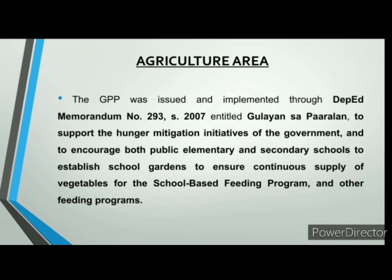The Gulayan sa Paaralan was issued and implemented through DepEd Memorandum No. 293 Series of 2007, entitled Gulayan sa Paaralan, to support the hunger mitigation initiatives of the government and to encourage both public elementary and secondary schools to establish school gardens to ensure continuous supply of vegetables for the school-based feeding program and other feeding programs.